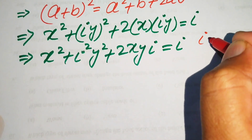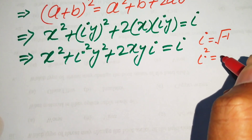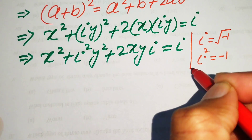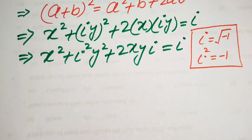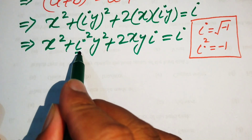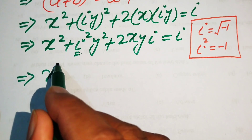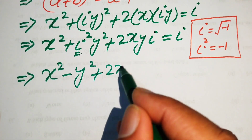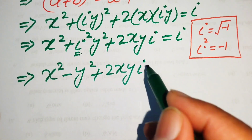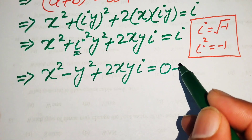We know that iota equals the square root of minus one, so when we square both sides, iota squared equals minus one. Substituting this value on the left-hand side, it becomes x squared minus y squared plus two x y times iota.